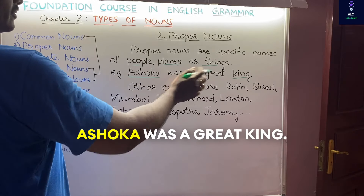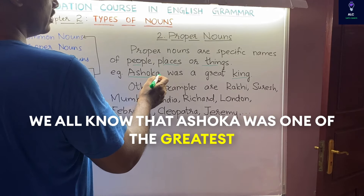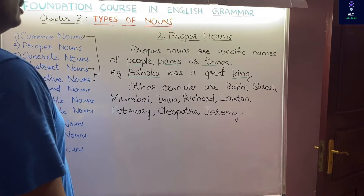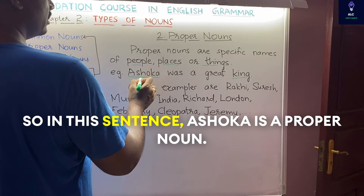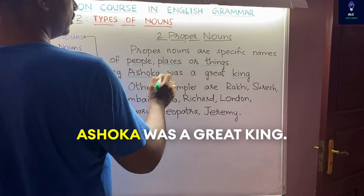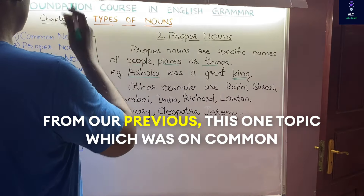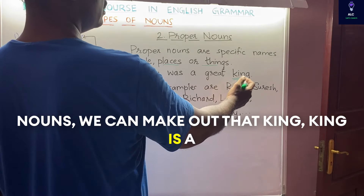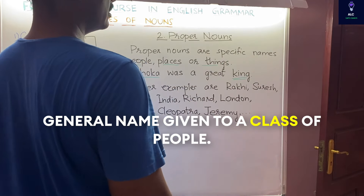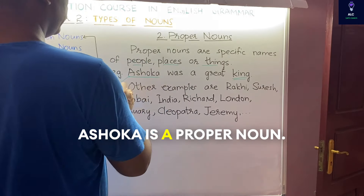Consider the sentence: 'Ashoka was a great king.' Ashoka was one of the greatest emperors of India, so Ashoka is a specific name — Ashoka is a proper noun. What about king? King is a general name given to a class of people, so king is a common noun, while Ashoka is a proper noun.